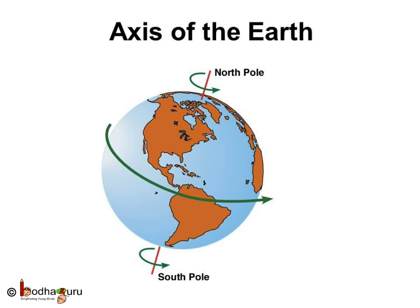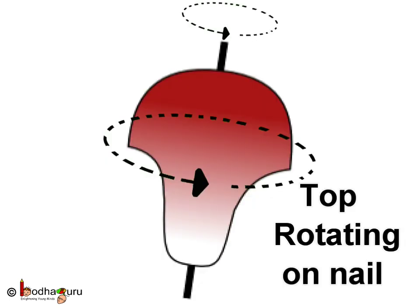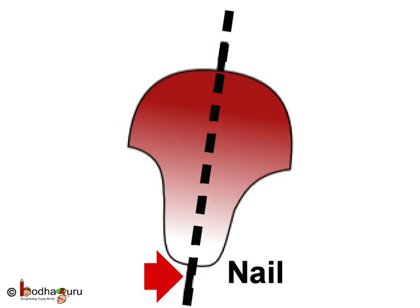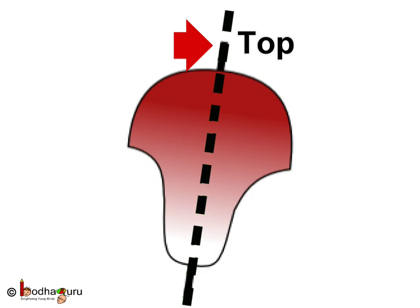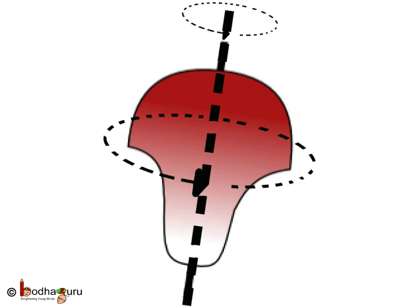Before we look at Earth's movement, let us define a few terms. Let's say there is a top which is rotating on its nail. If you draw an imaginary line from the nail to the top, it will be the line around which the top rotates. Same way,